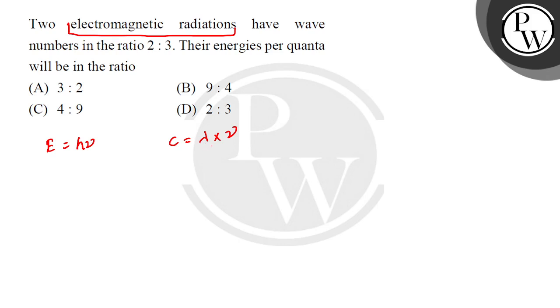What does wavelength mean? The distance between the two consecutive crests and the two consecutive troughs, right, in per unit time. So this is our wavelength and frequency I have already told you.